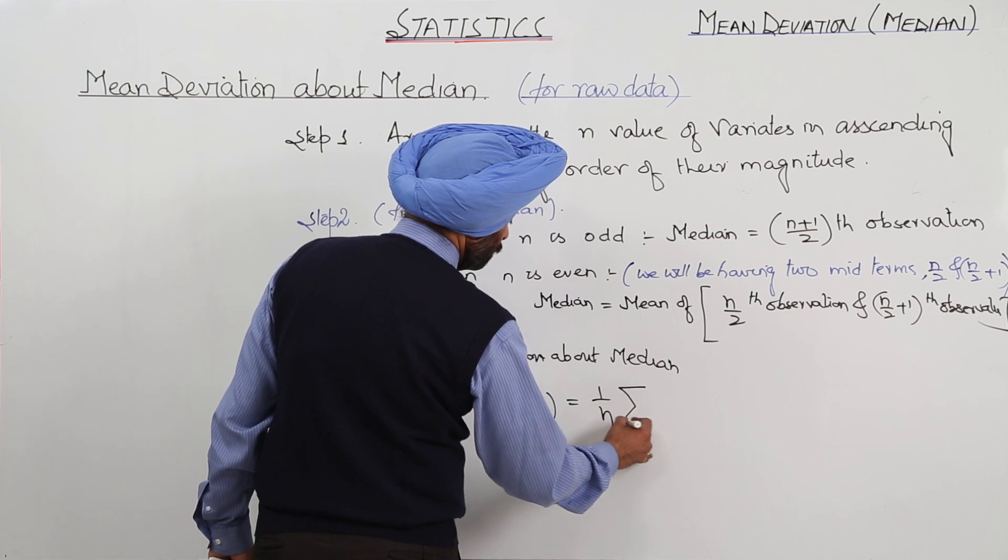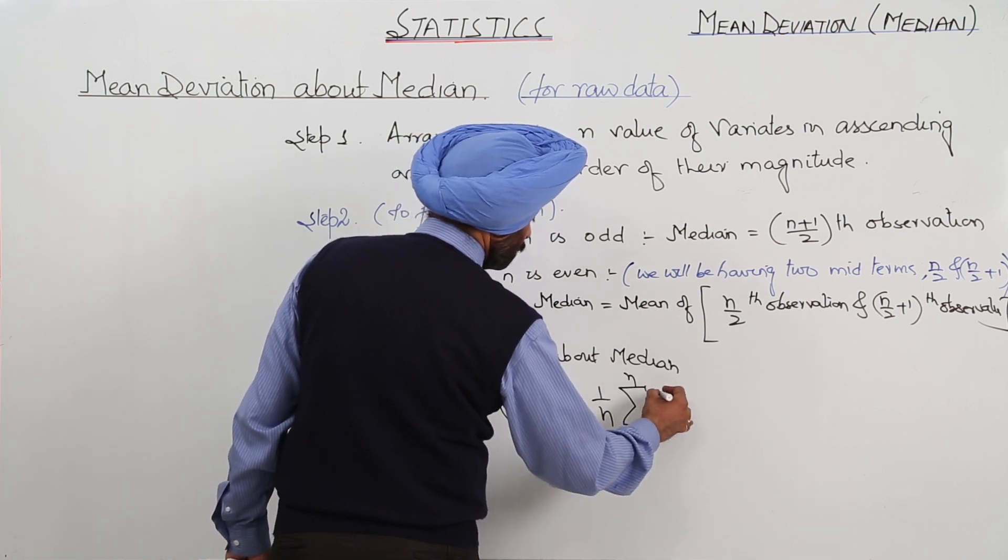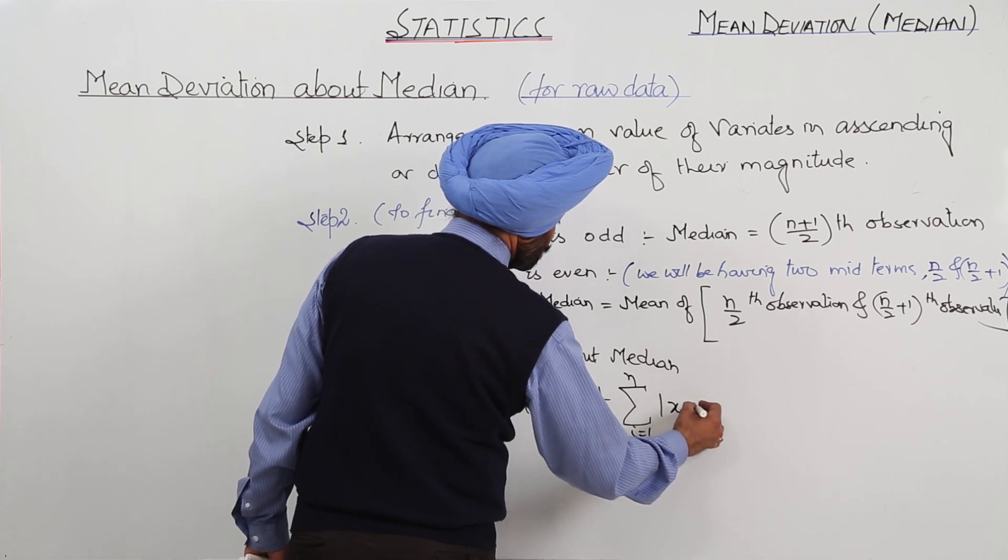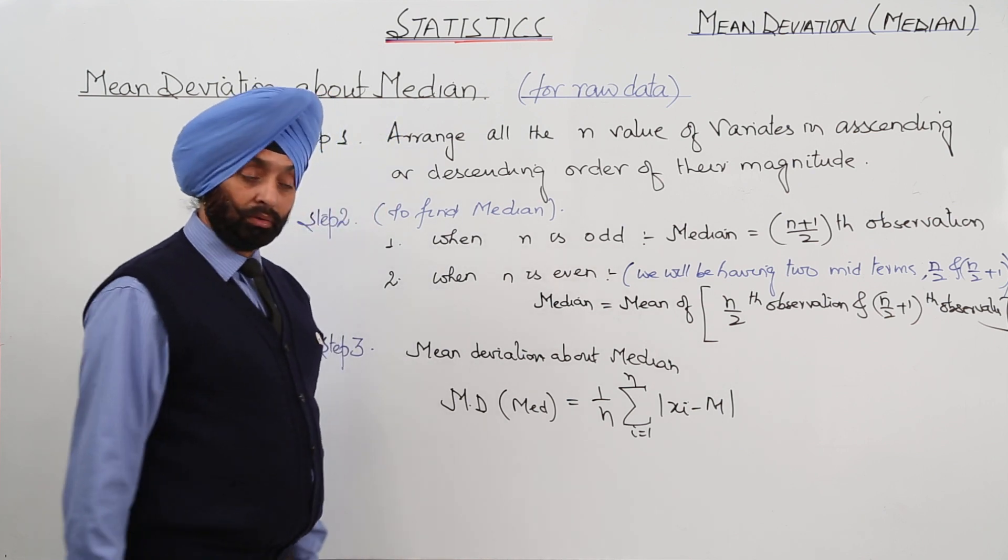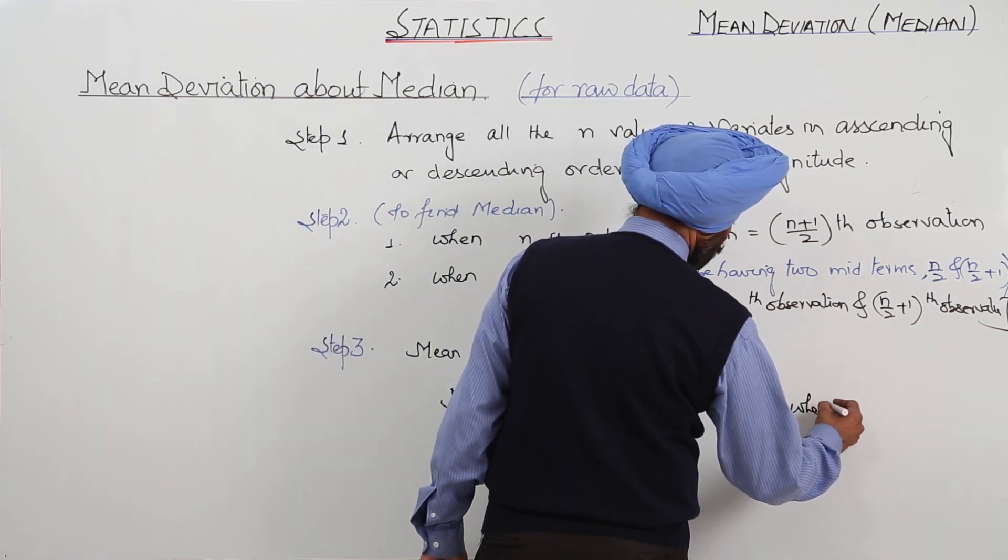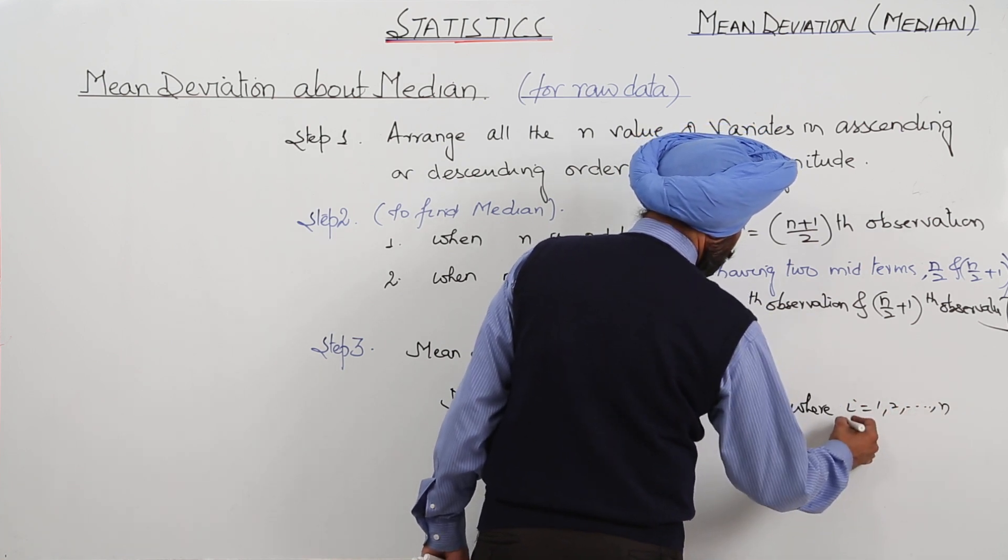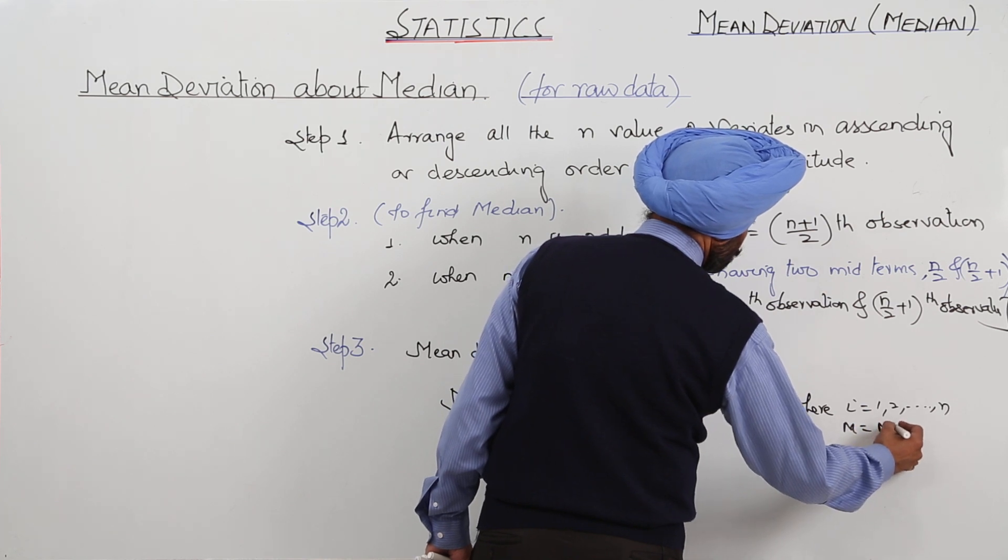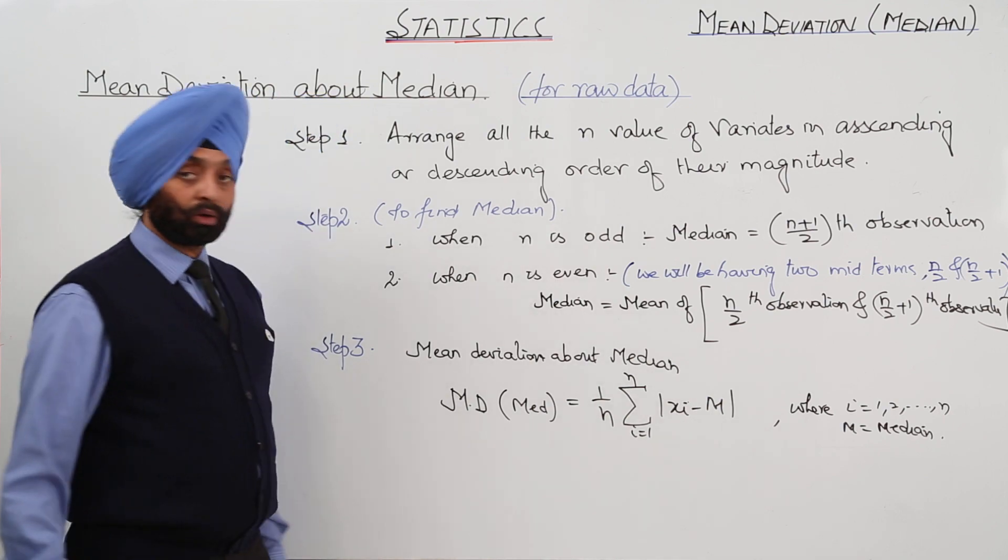One upon n, summation for n, xi minus m, where m stands for median. i is equal to 1 to n and m is median. So this was all about the raw data.